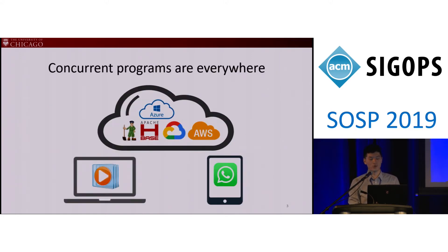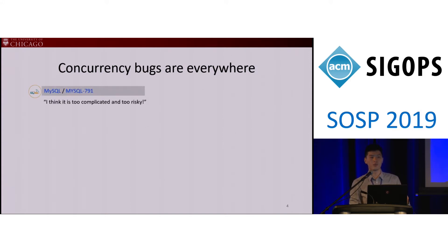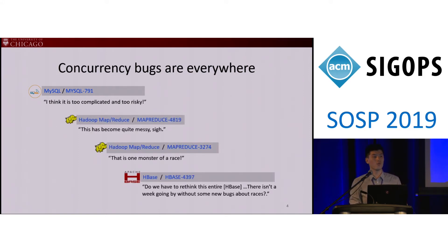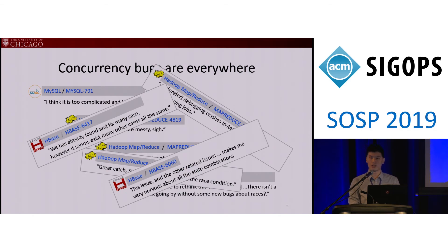Nowadays, concurrency programs are everywhere — in the desktop, in the mobile phone, and in the cloud. Concurrency bugs are also everywhere. It's very common to see developers complain about concurrency bugs, like: 'This is one monster of a race, there isn't one week going by without new bugs about races.' And there are many, many more complaints about concurrency bugs.